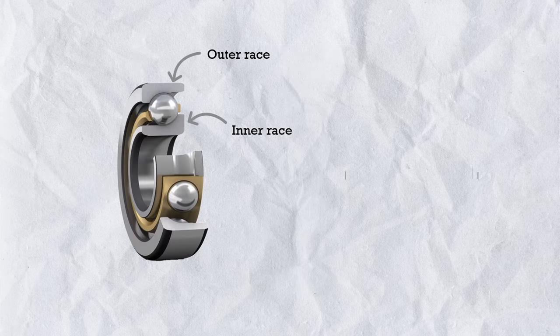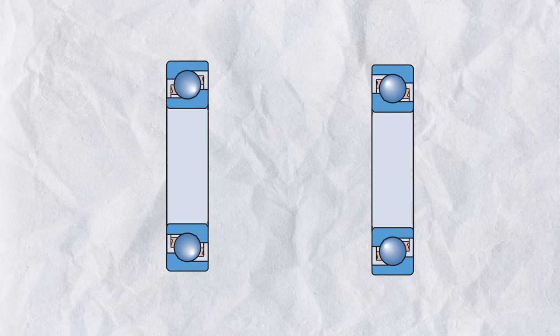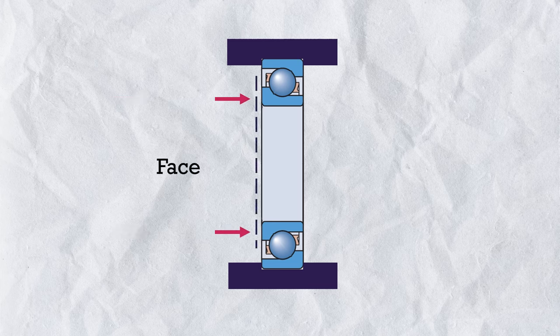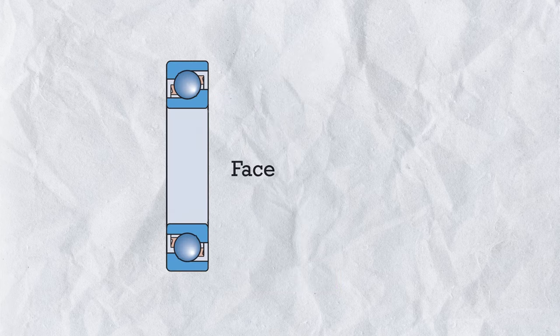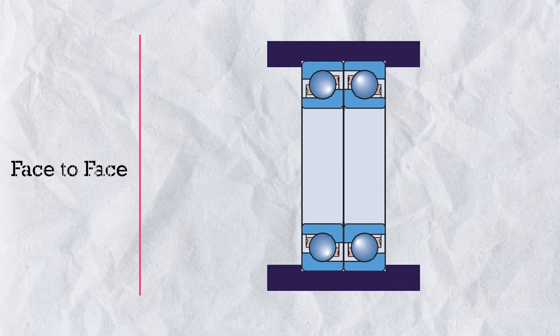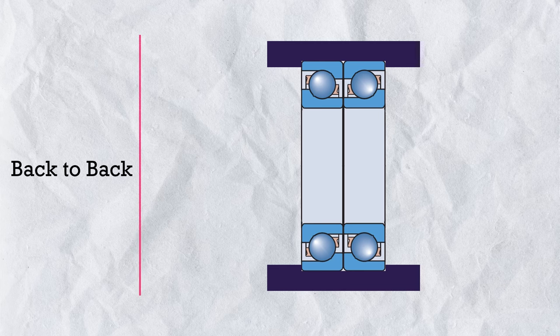Angular contact bearing is a non-separable bearing, but what if in an application the axial load comes from both sides? Then we use pairs of angular contact bearings. We can arrange pairs in three possible basic orientations. The first is face-to-face. The loading side is the face of the bearing — the side from which axial load can be applied to the shaft. Opposite to that is the back of the bearing. If we place the bearings face-to-face, it's called face-to-face arrangement. If we flip both bearings, it's back-to-back arrangement. And if we arrange them back-to-face, we call it tandem arrangement.